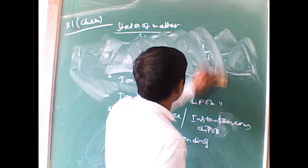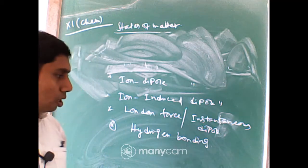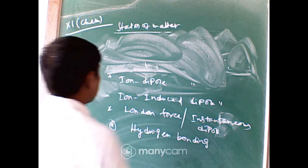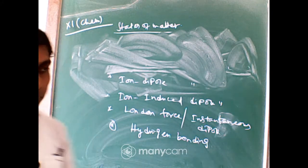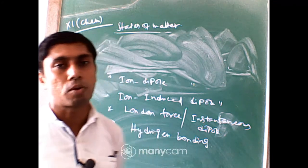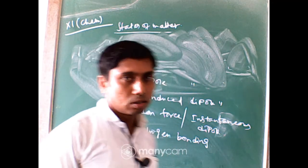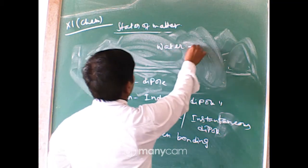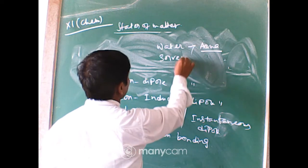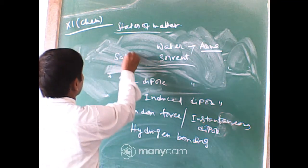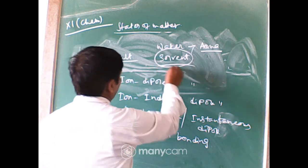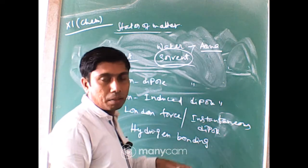Next is ion-dipole interaction. Consider a physical process: dissolving salts such as sodium chloride, potassium chloride, or sodium sulphate in water. Water acts as the solvent. Salts have two parts — a cationic part and an anionic part — and the solvent solvates each part differently, as seen in symbols like Na⁺(aq).